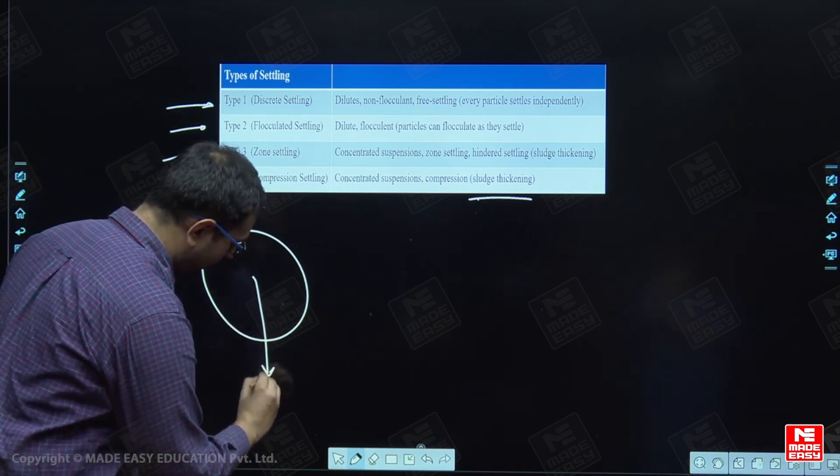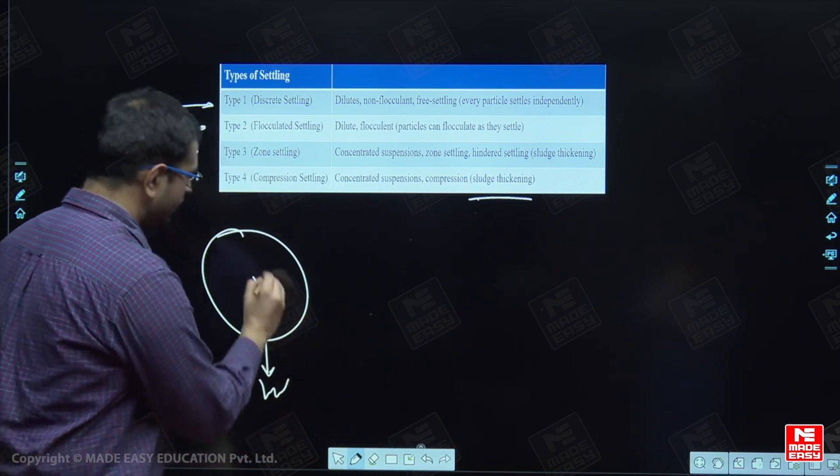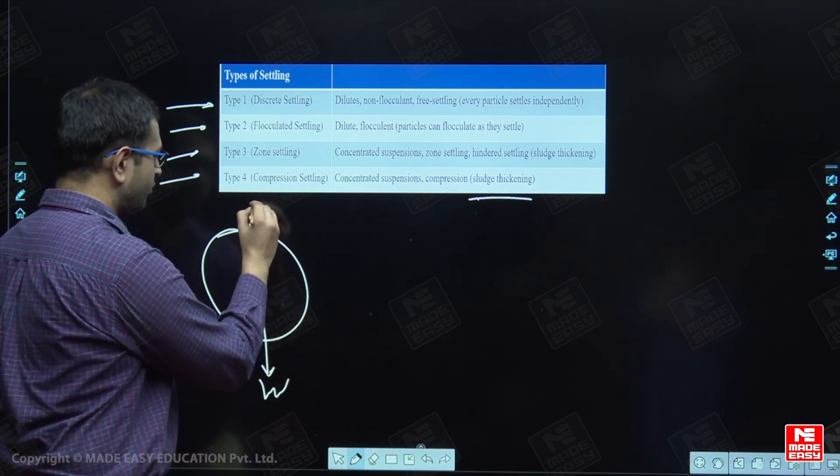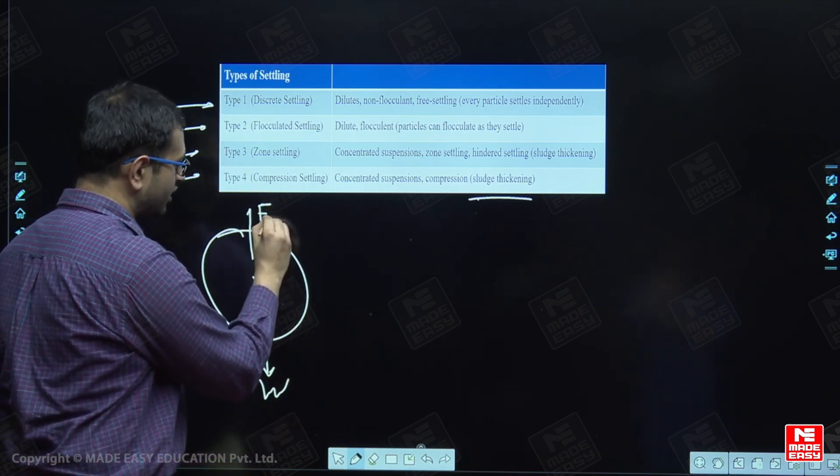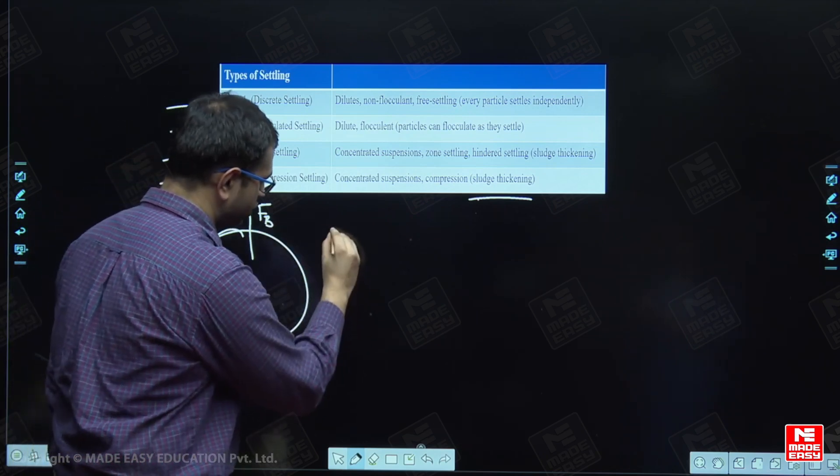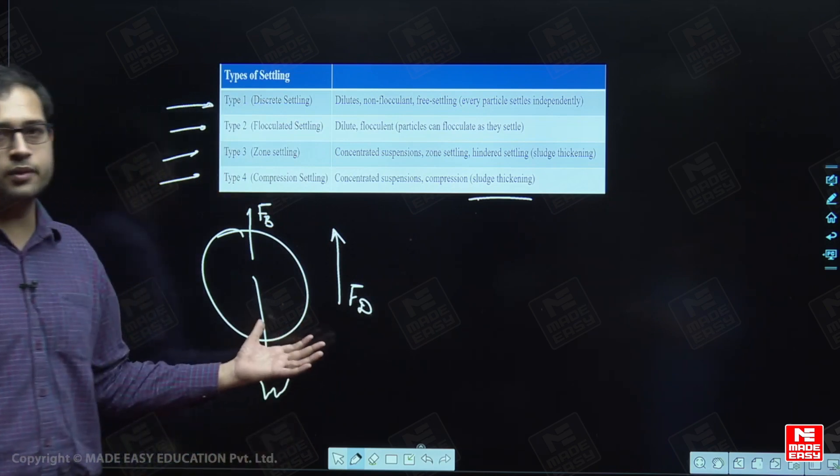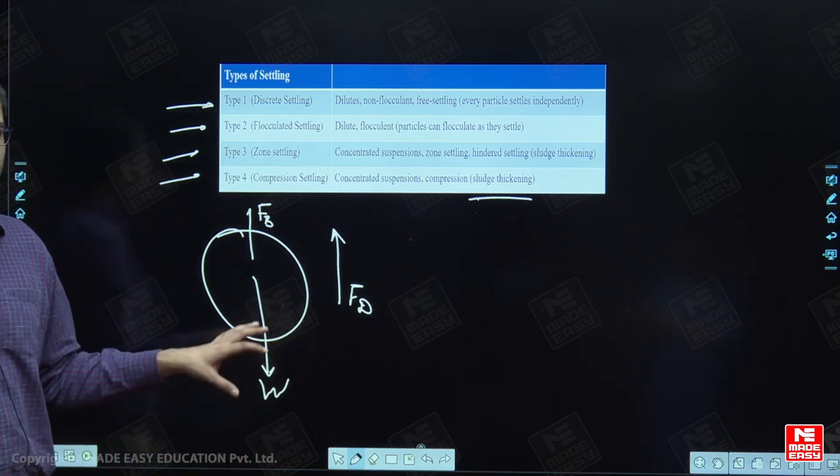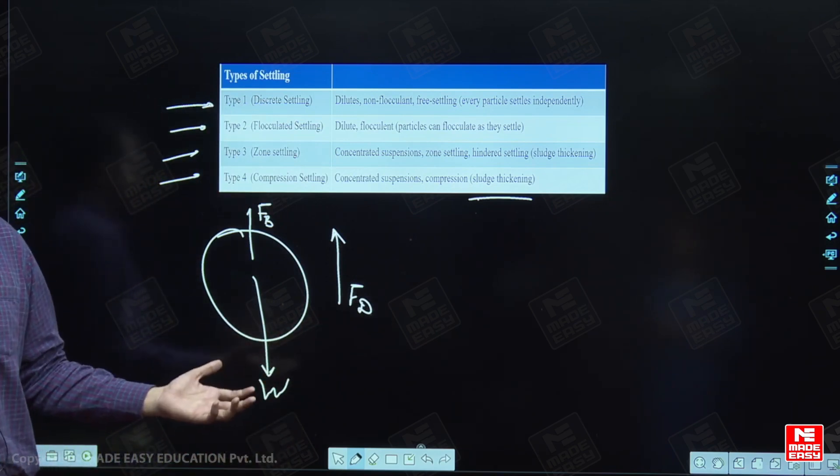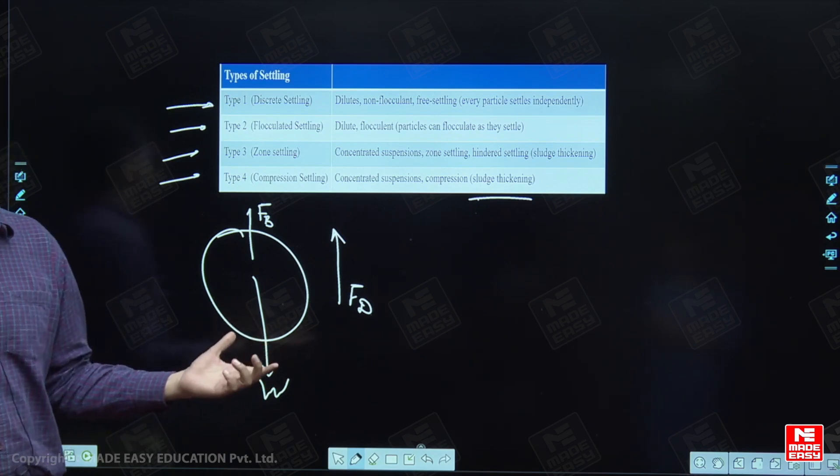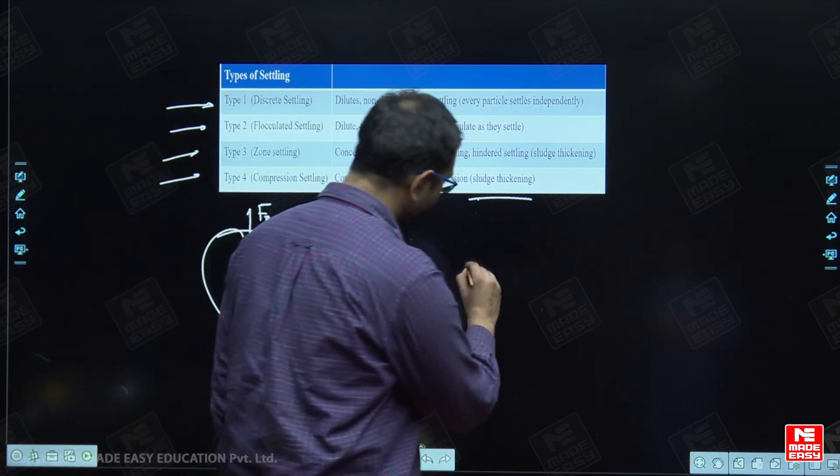the forces acting are weight of the particle, then there is a buoyant force acting on the particle, and then there is a drag force. These 3 forces are in equilibrium with each other. Hence, there is no acceleration. Thus, the velocity created is constant velocity. We term this velocity as the terminal velocity,